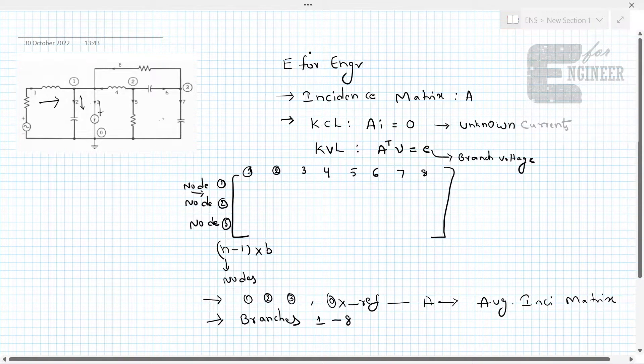How we will write? If we consider this branch 1 current, it is entering into node 1 voltage. In this node 1, this branch current is entering. Whatever the entering currents we have, we denote it with minus 1 and node 2 and node 3 has no relevance with this branch current, so we give it as 0. We can just write here node 0 for your understanding.